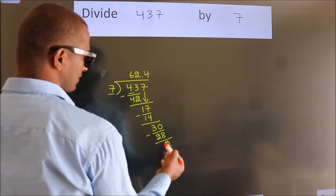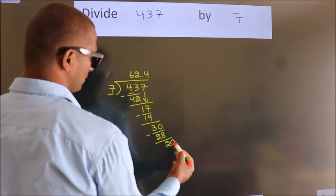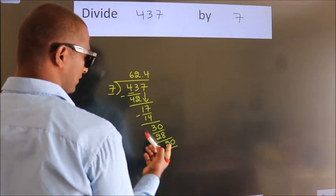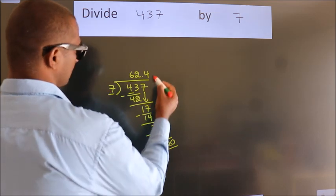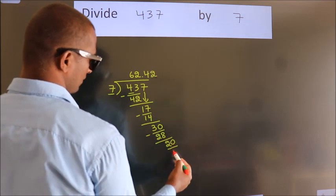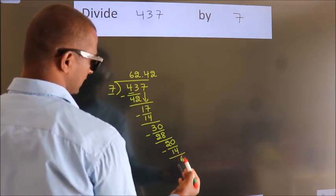After this, we already have the decimal, so directly take 0, giving us 20. A number close to 20 in the 7 table is 7×2=14. Now we subtract and get 6.